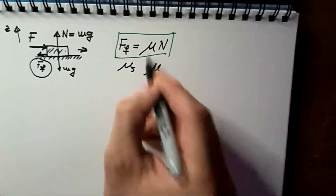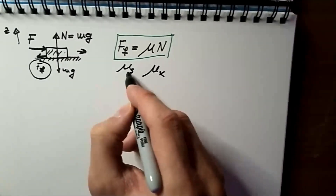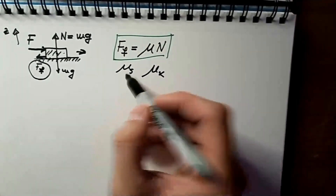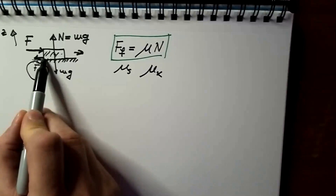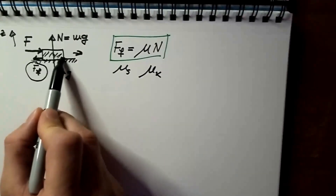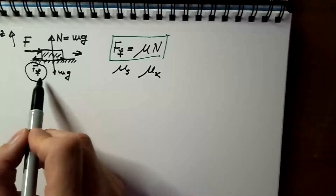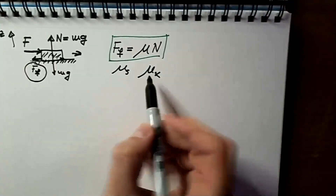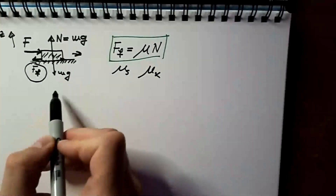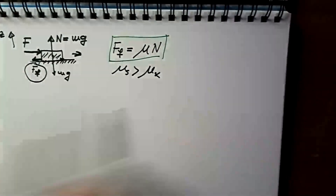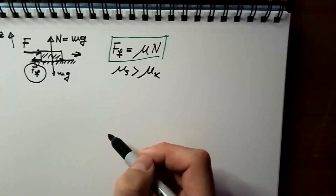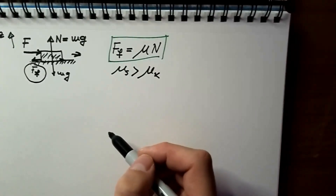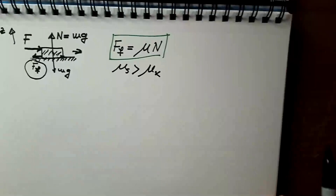We have two types of these coefficients. We have the static frictional coefficient, which is related to the case when the object is still steady and I just start pushing it. Then there is the kinematic frictional coefficient, which is related to friction when the object is already moving. The static frictional coefficient is always larger than the kinematic one, and that's one of the reasons why when you want to push a car it's always most difficult to start — once the car is rolling, it's easier to keep that speed.